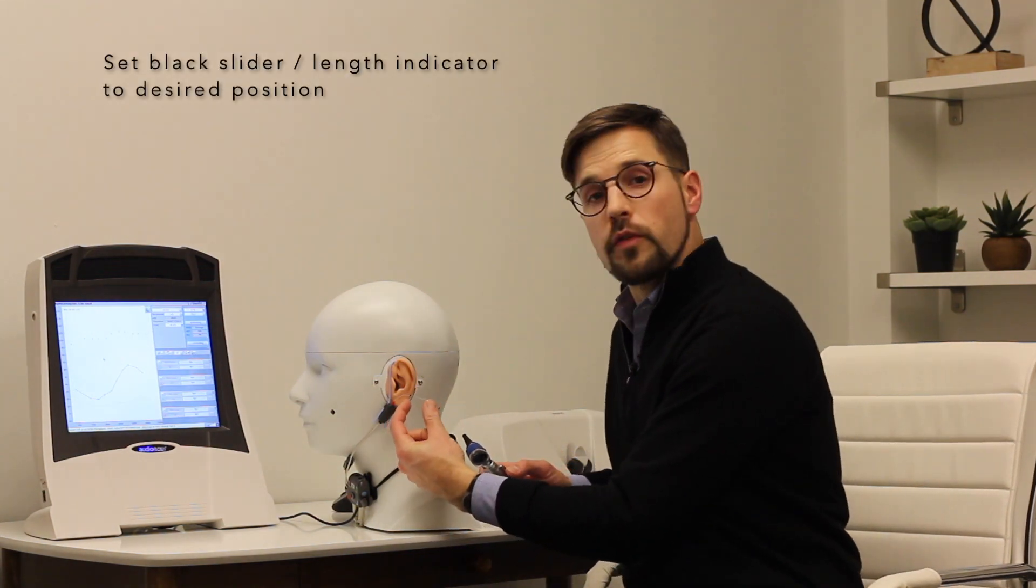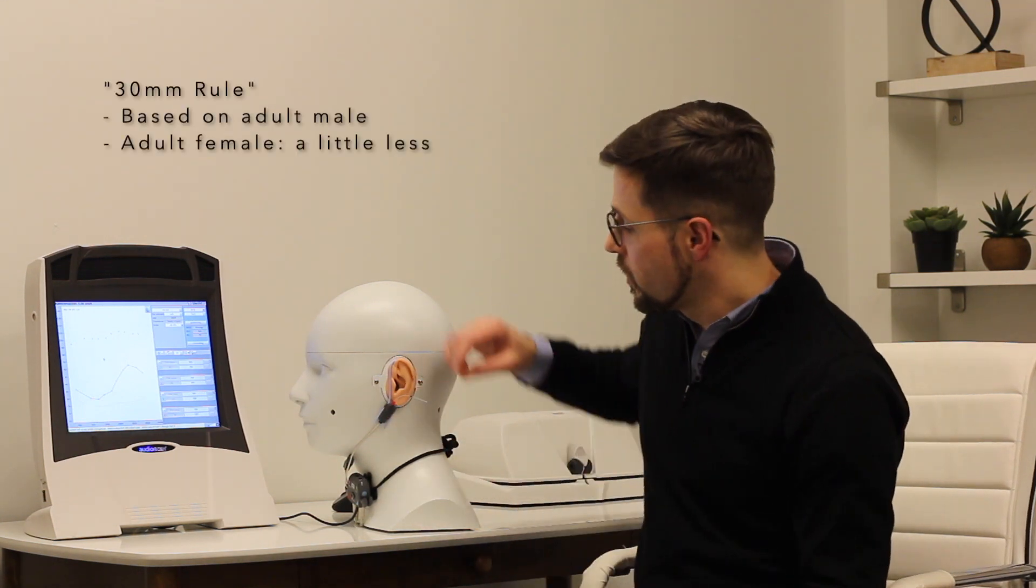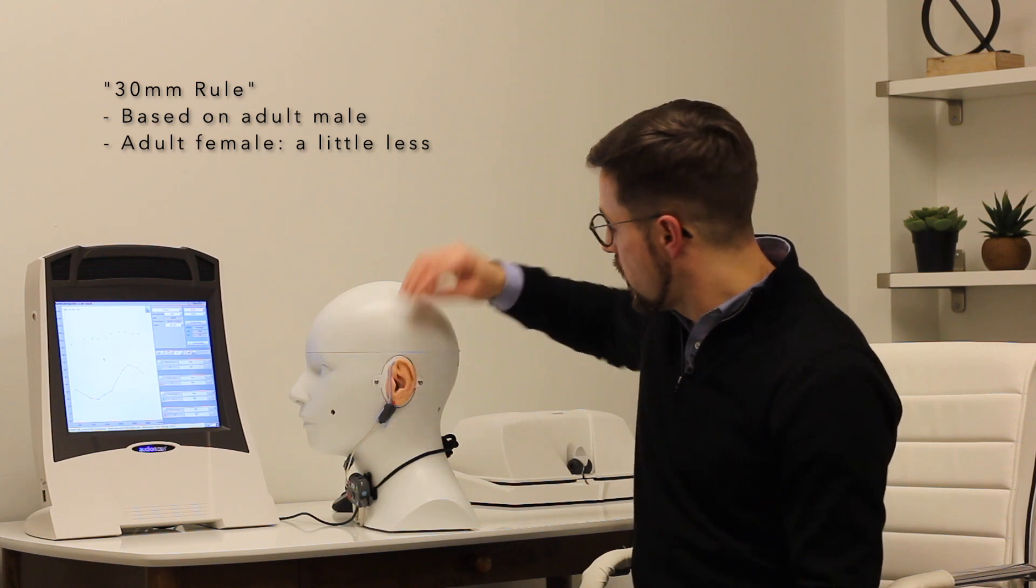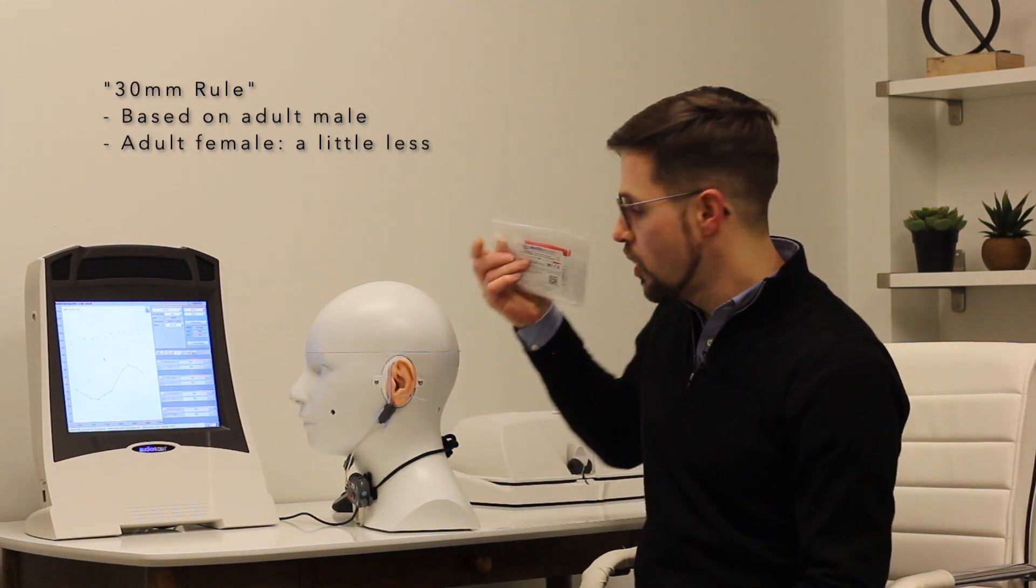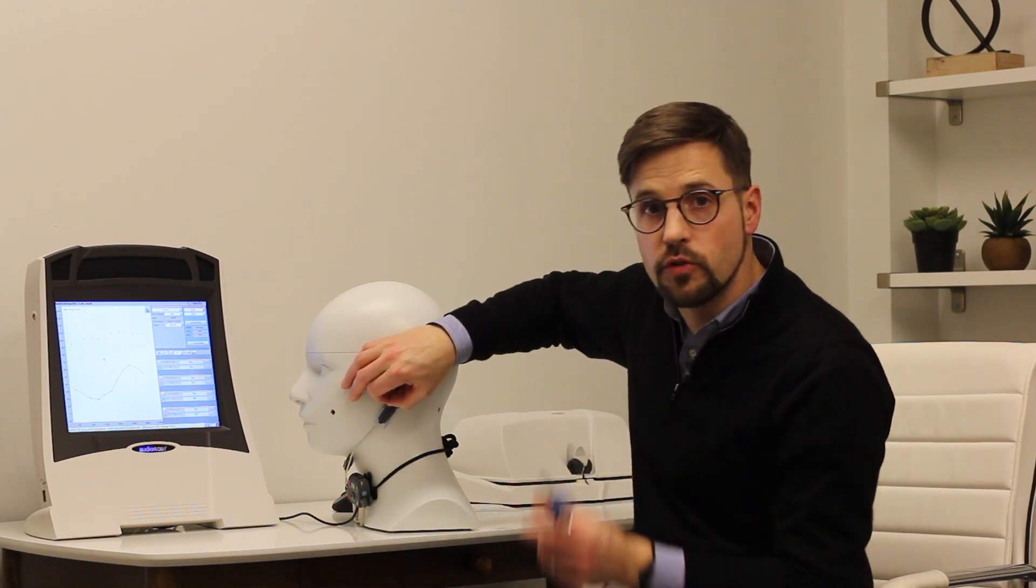Step number two is to measure the length of your probe tube to make sure that it's about 30 millimeters give or take. If you don't have a ruler or pre-measured probe tubes, the audio scan probe module is about 30 millimeters, so that's perfect.